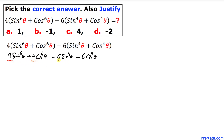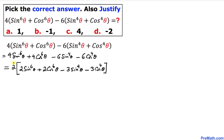Now we can see that 2 is in common among the coefficients 4 and 6. Here I have factored out 2, so we are left with 2 times: sine to the power 6 theta, plus 2 cosine to the power 6 theta, minus 3 sine to the power 4 theta, minus 3 cosine to the power 4 theta.